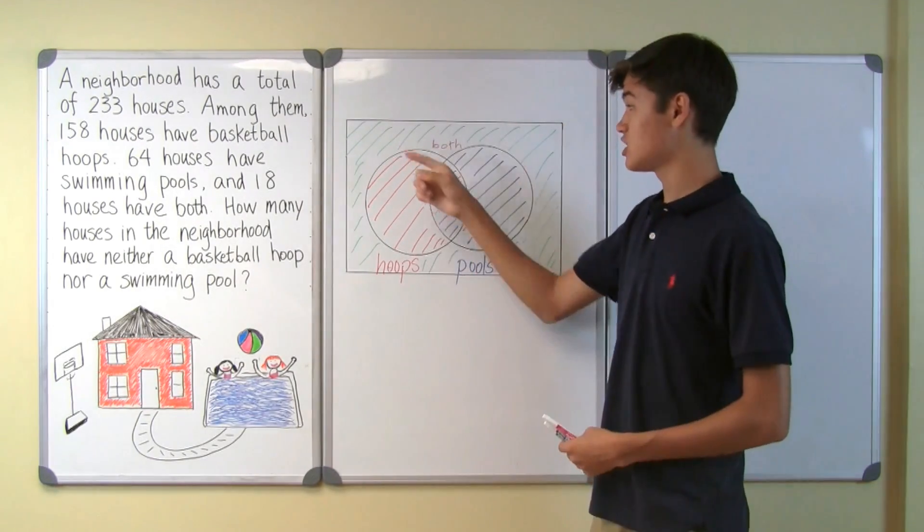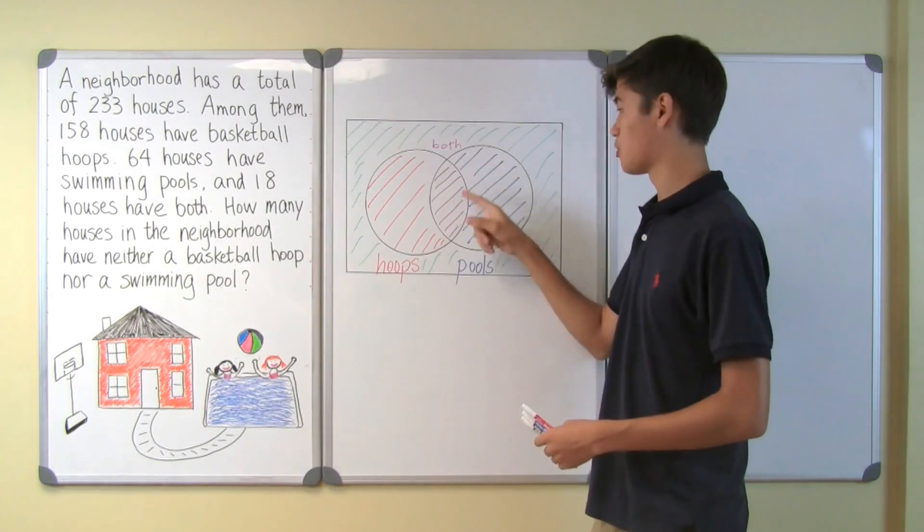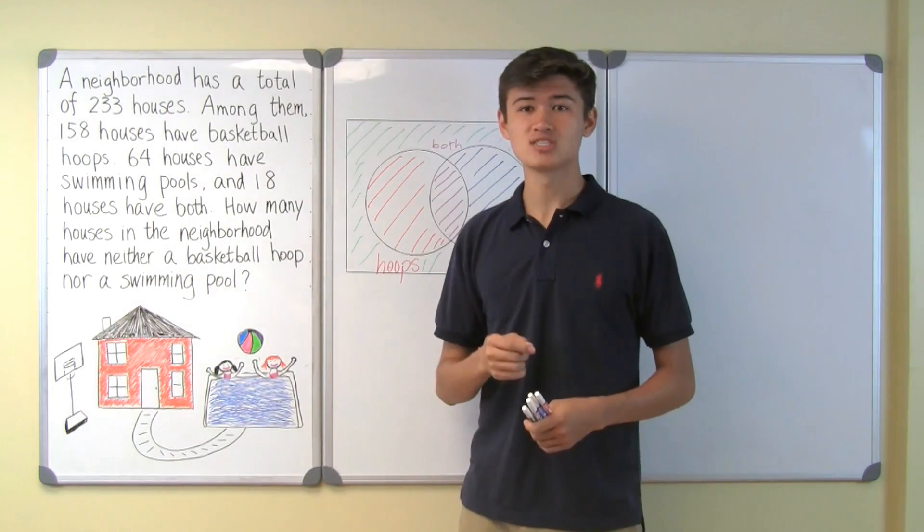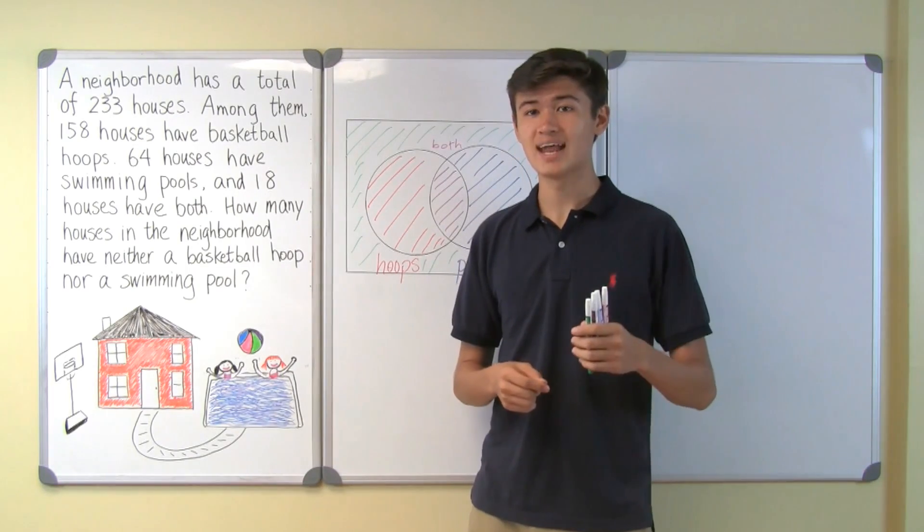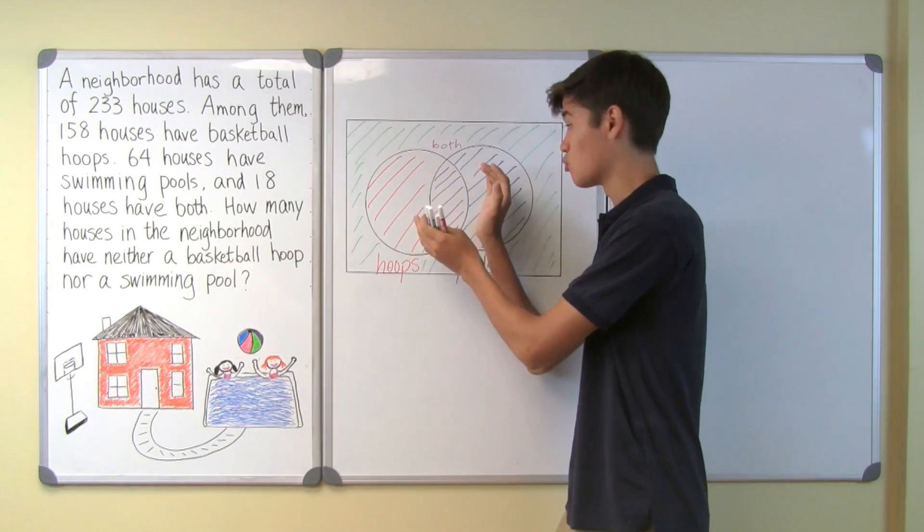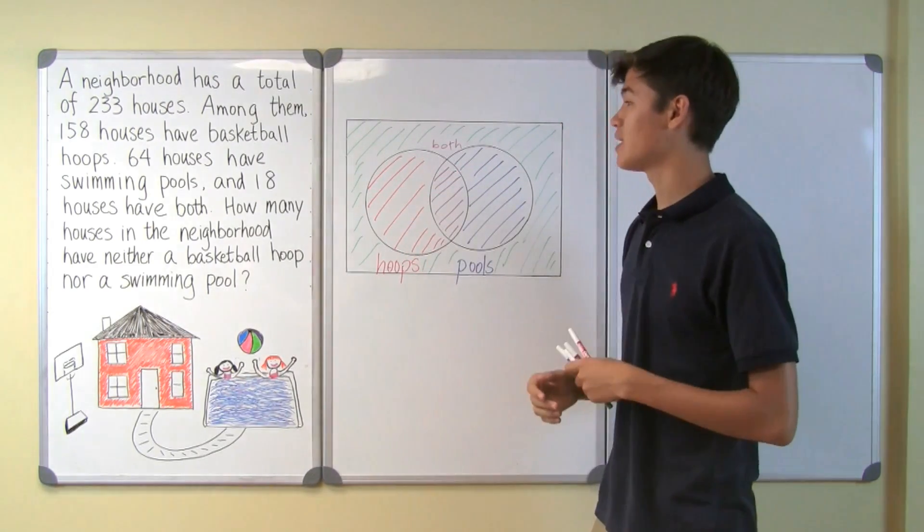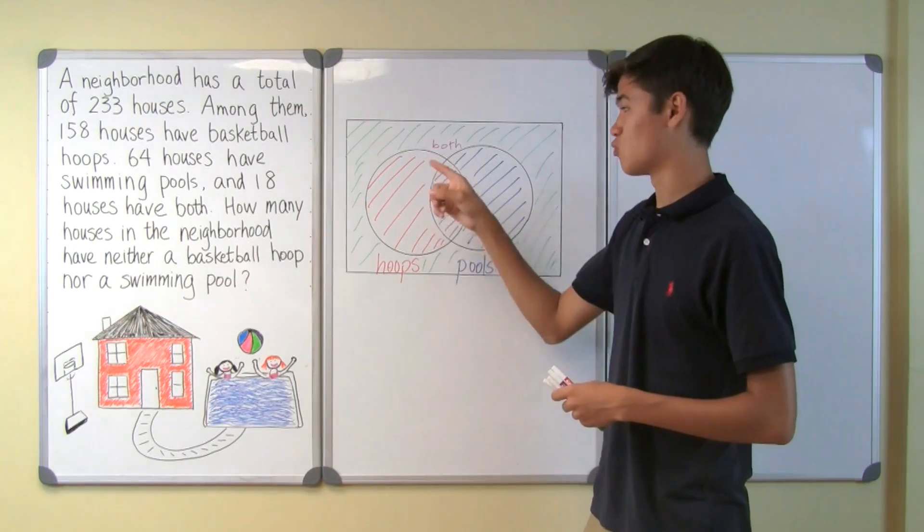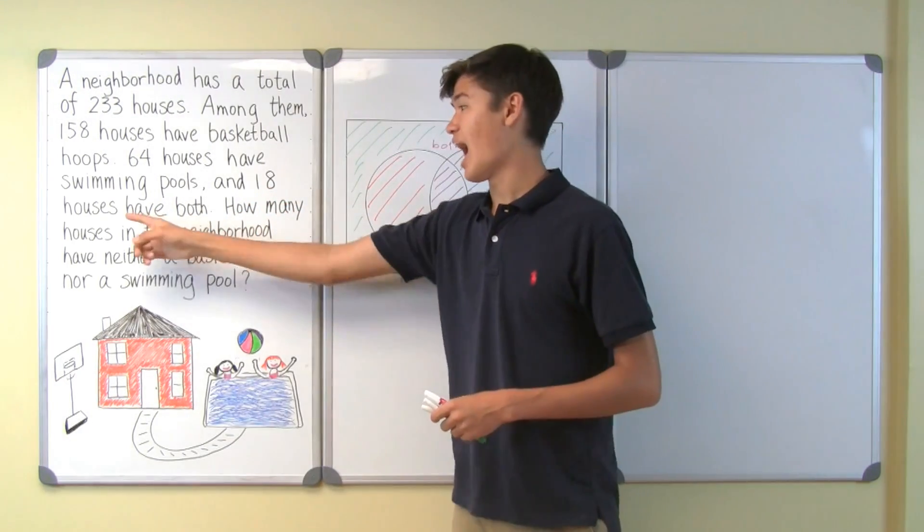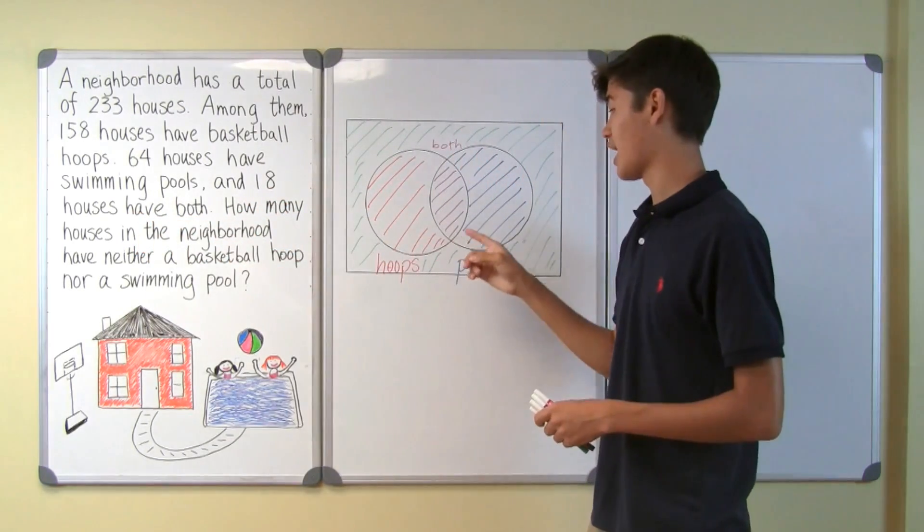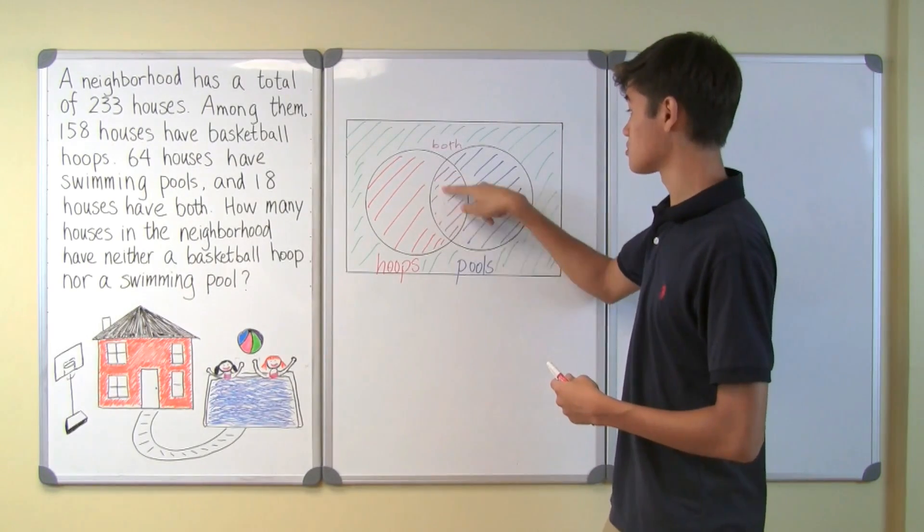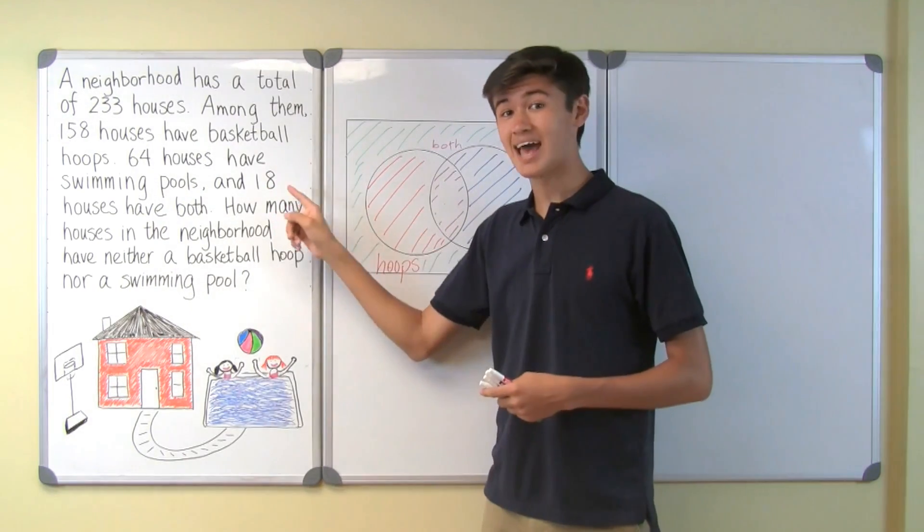the question tells us that there are 233 houses. This will be the whole rectangle, or the green region, the red region, the purple region, and the blue region all combined. Next, the question tells us that 158 houses have basketball hoops. This is the red and purple circle. We don't know how many houses are represented by the red section. But the question does tell us that 18 houses have both basketball hoops and swimming pools. And that's the purple section. So we know that the purple section represents 18 houses.